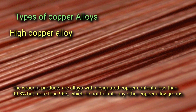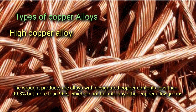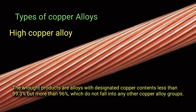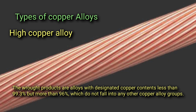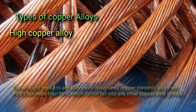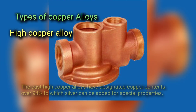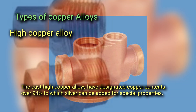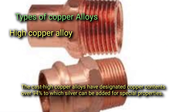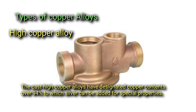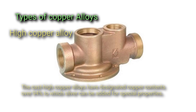The raw products are alloys with a designated copper content of less than 99.3% but more than 96%, which do not fall into any of the copper alloy groups. The cast high copper alloys have designated copper contents over 94%, to which silver can be added for special properties.